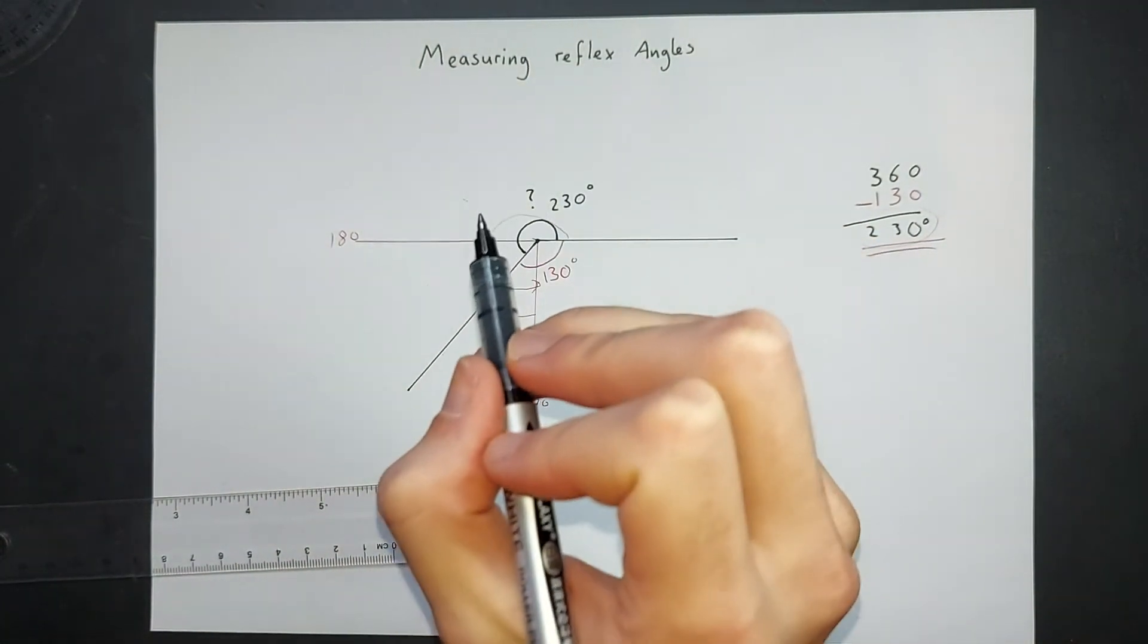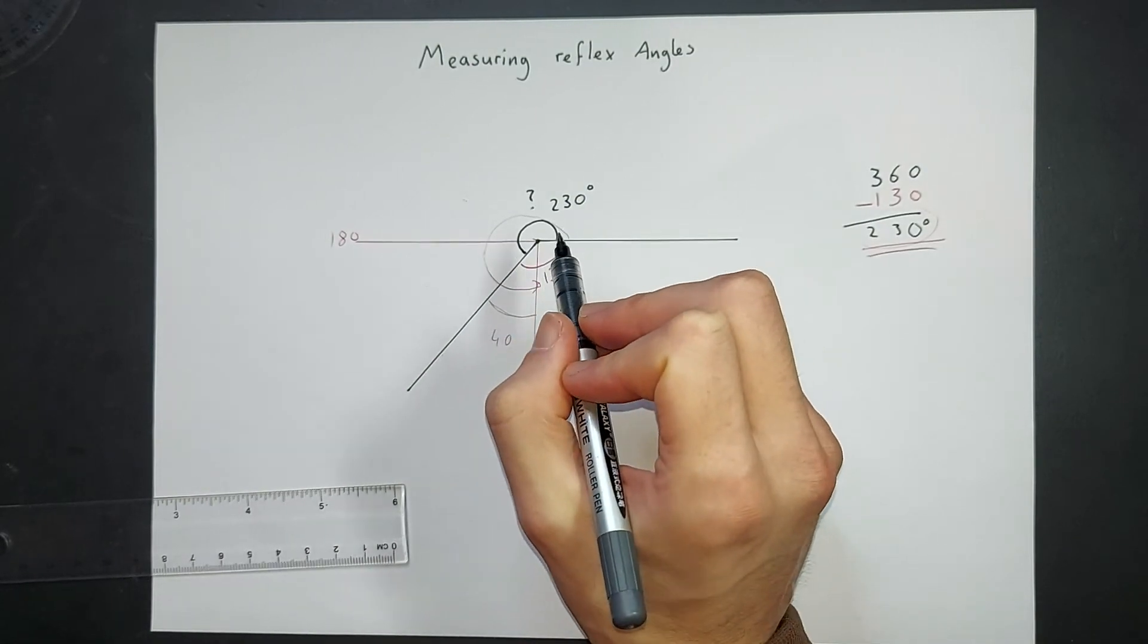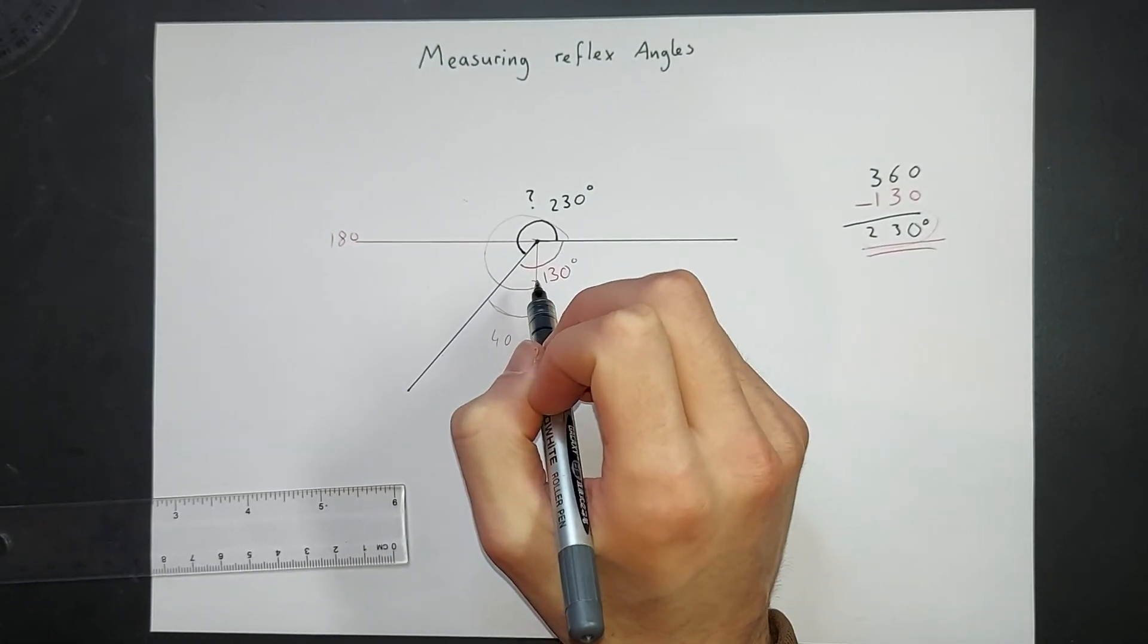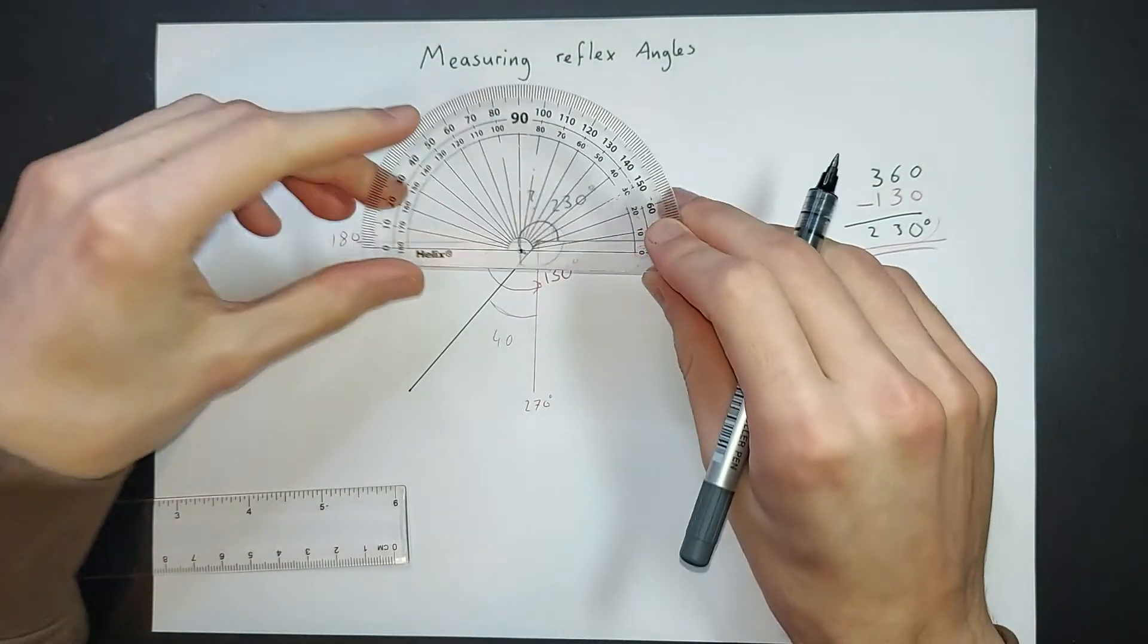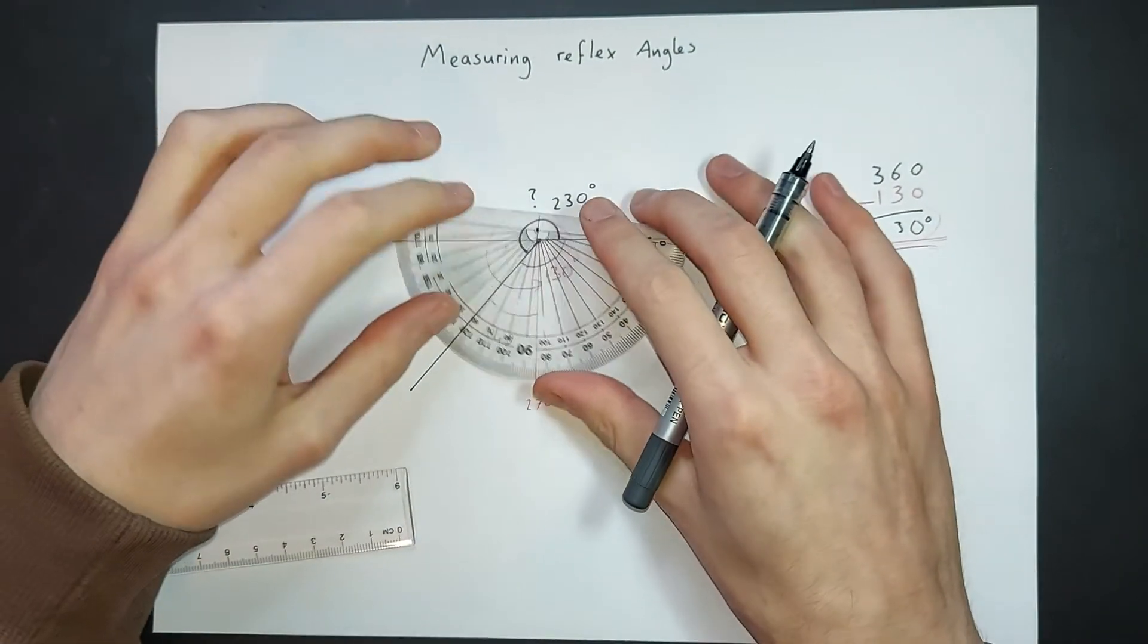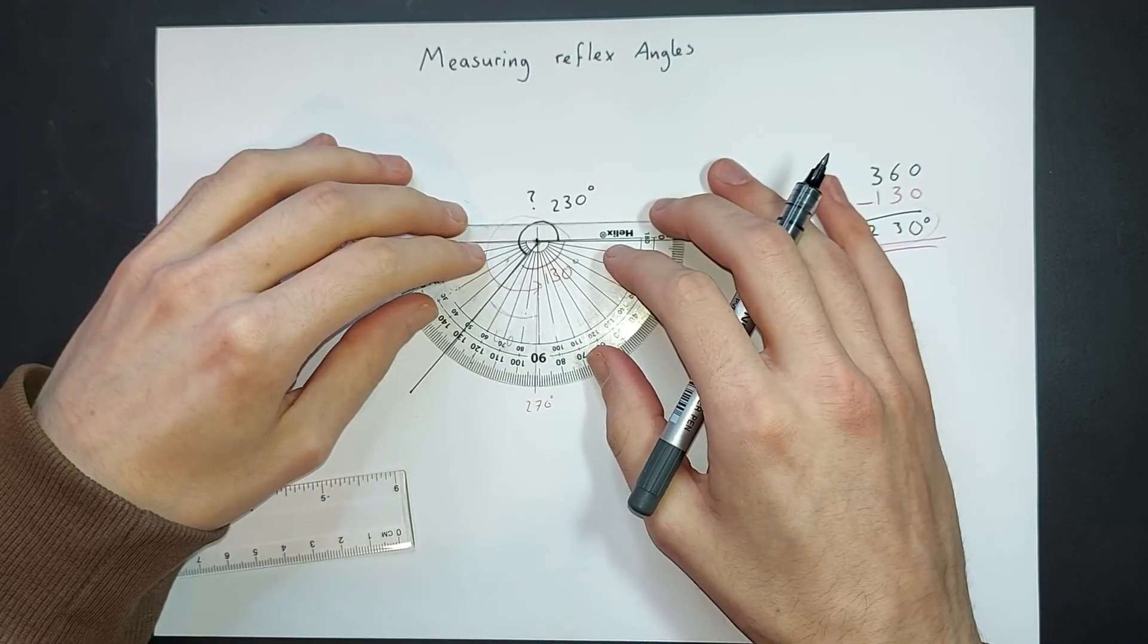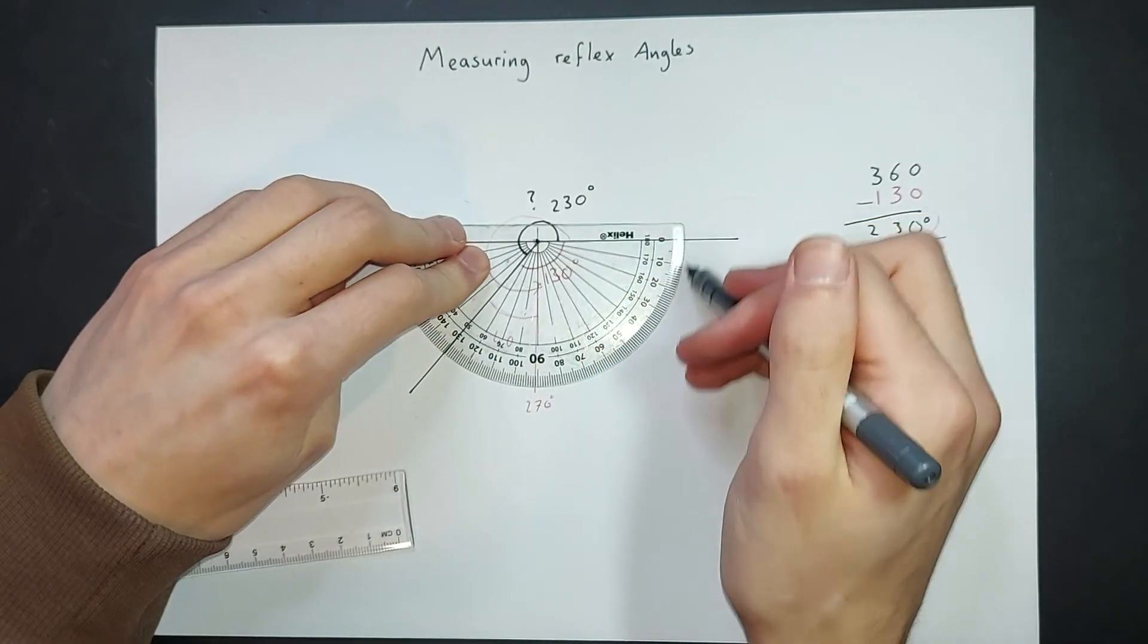So when measuring a reflex angle, unless you have a circular protractor, you have to look at one of the smaller angles. In this case, I measured that obtuse angle here.